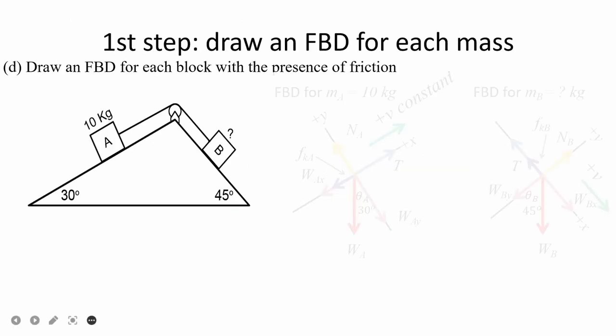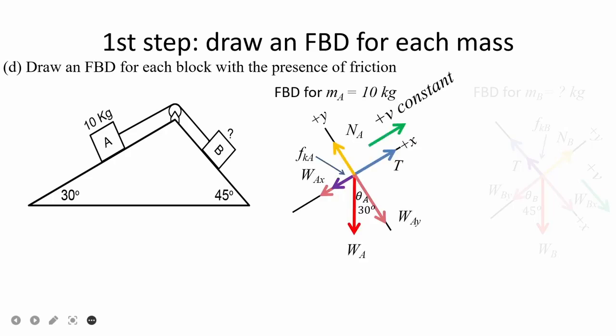For letter D, the problem introduces the presence of the friction, or more specifically kinetic friction. Going back to step 1, we redraw it such that the friction force is added onto the FBD. Recall that the friction force opposes the direction of the block, so for mass A it is on negative X axis and for mass B it is also on the negative X axis.